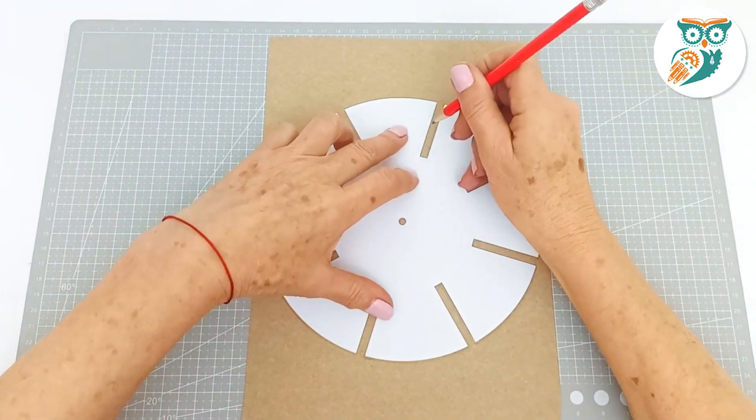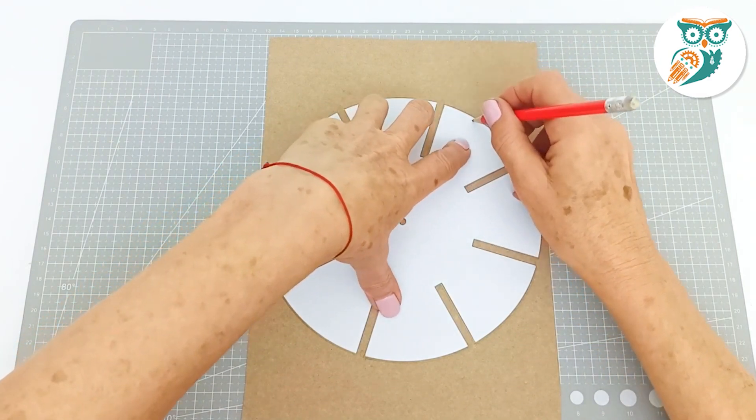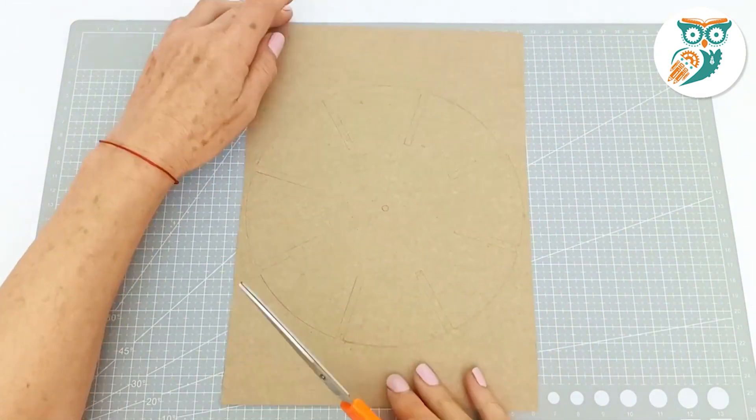We're going to take a side of the cereal box and trace out the template just like that, and then we're going to cut it out.